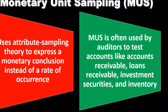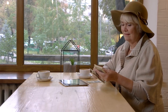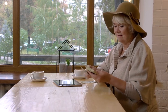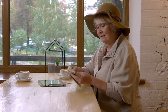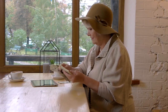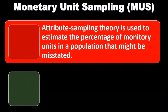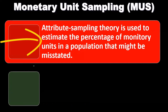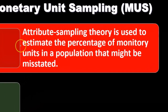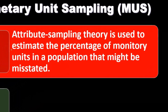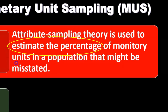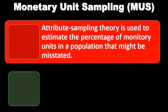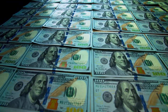These accounts are ones where we want to have a monetary dollar amount type of conclusion. We use monetary unit sampling because attribute sampling theory is used to estimate the percentage of monetary units in a population that might be misstated — the dollar amount in a population that might be misstated.